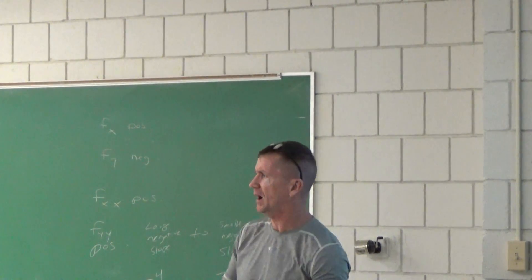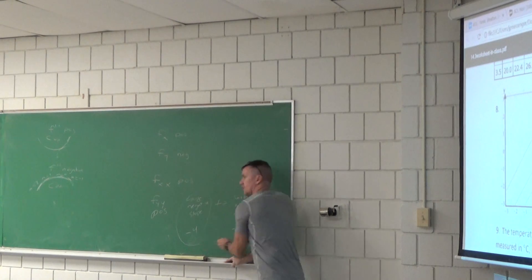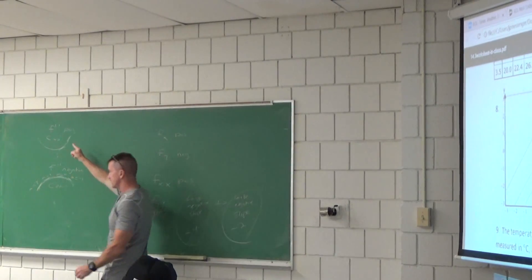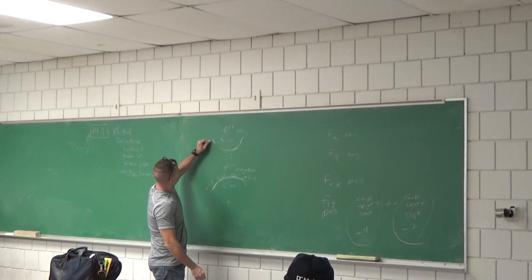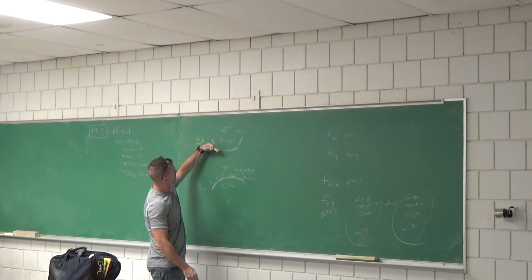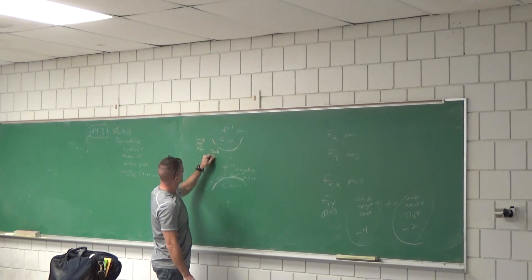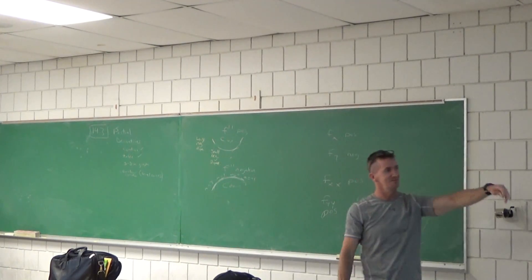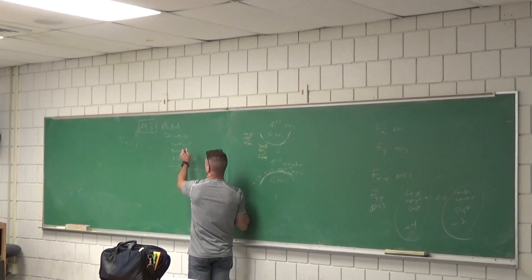That sometimes trips students up. They ask why fyy is positive. Because fy was negative: it went from a large negative slope to a smaller negative slope, and it's still concave up. So you've now covered partial derivatives from contour curves, three-dimensional graphs, tables, and equations.